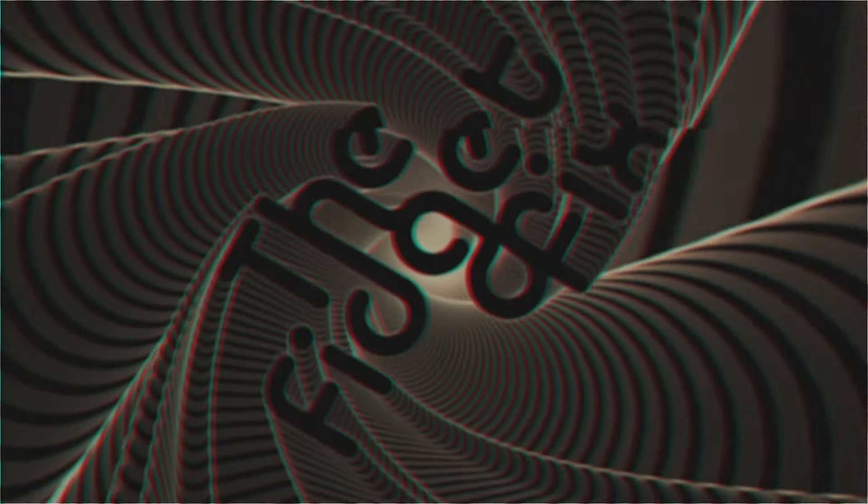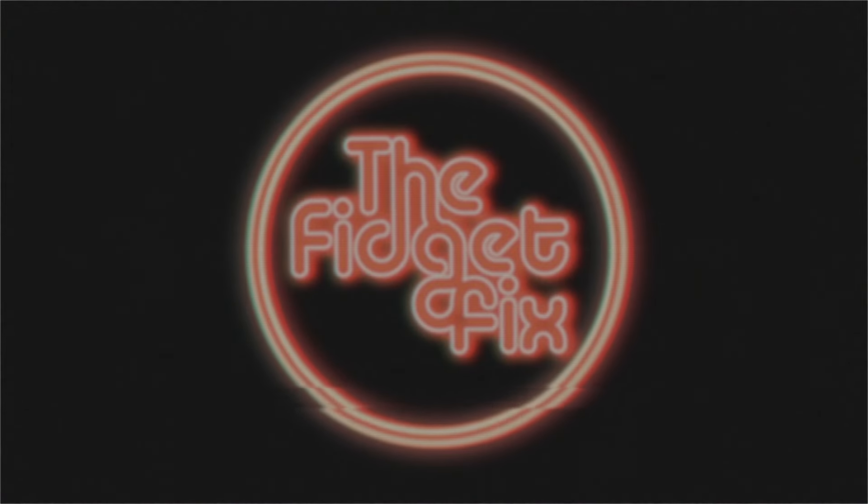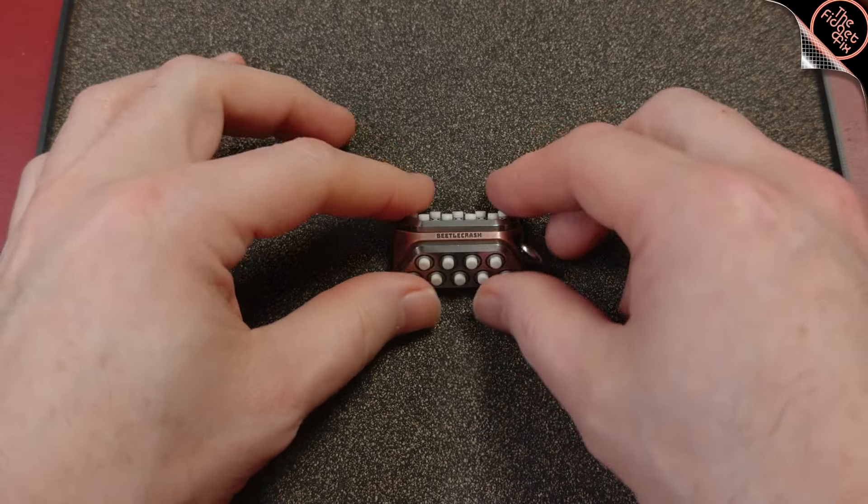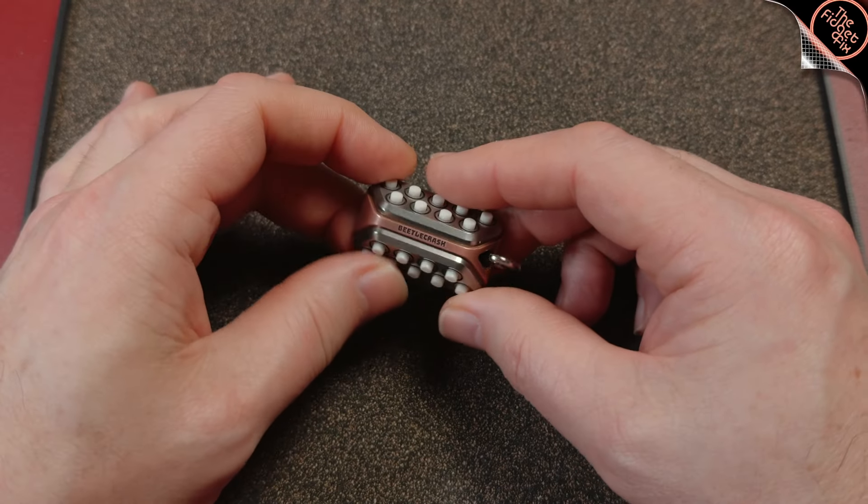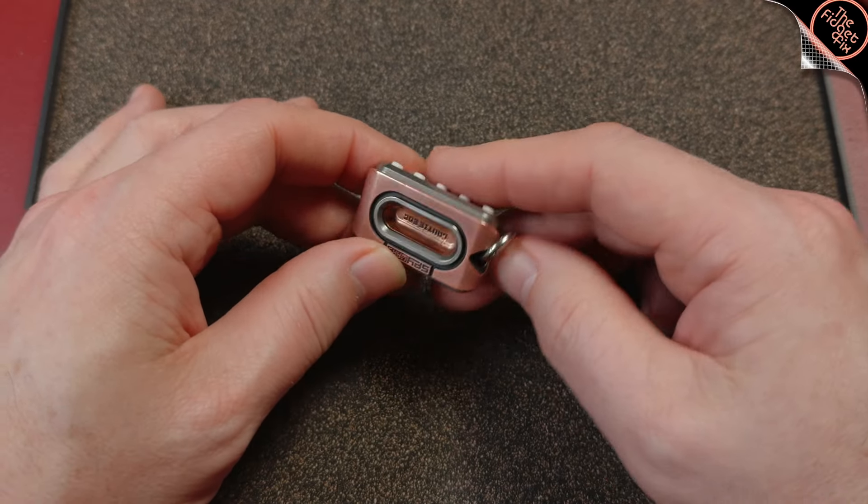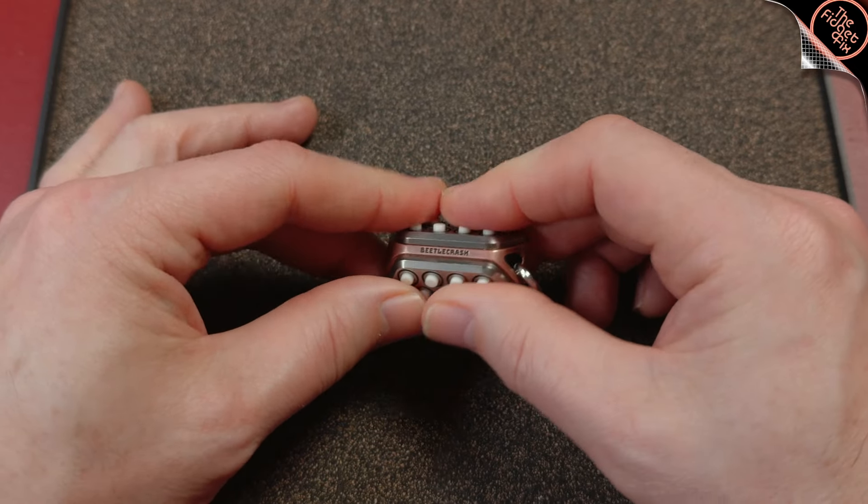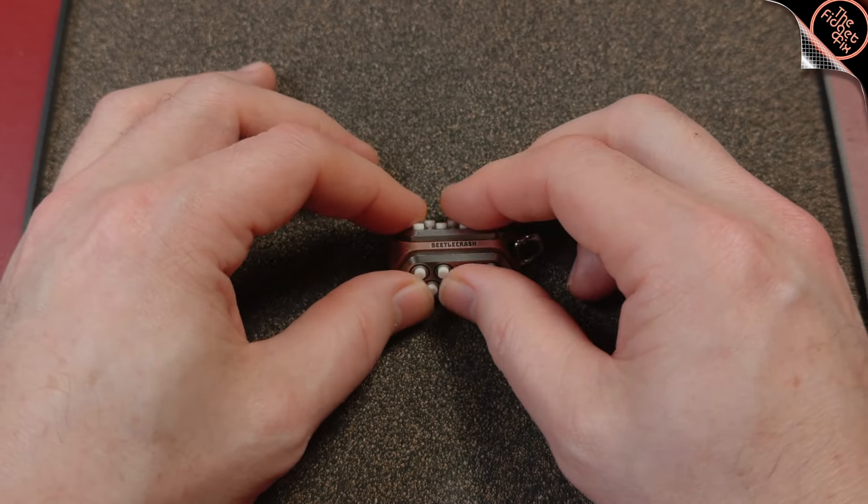It's the beetle crash. Let's go. Okay, here's the beetle crash. This is in I think stainless steel and copper, I believe. This was a sale. This was something I bought off of someone else secondhand.